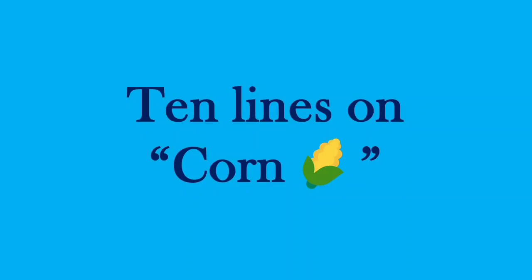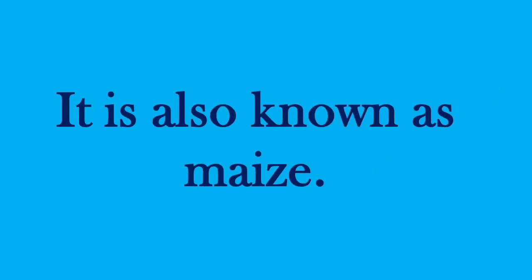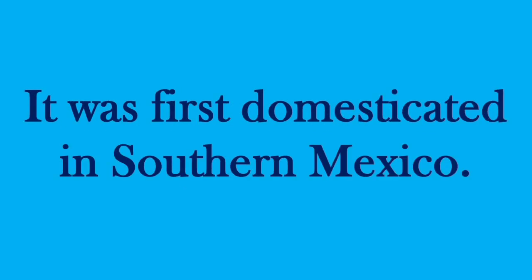10 Lines on Corn. Corn is a member of the Grass family. It is also known as maize. It was first domesticated in southern Mexico.